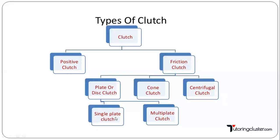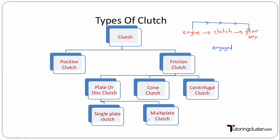Now, what are the different types of clutch? Basically, clutch is mounted between engine and gearbox. It is used to engage or disengage the engine from the gearbox as per the will of the driver. If clutch is in engaged condition, then power is getting transferred from engine to the gearbox. If clutch is in disengaged condition, then power cannot get transmitted from engine to the gearbox.